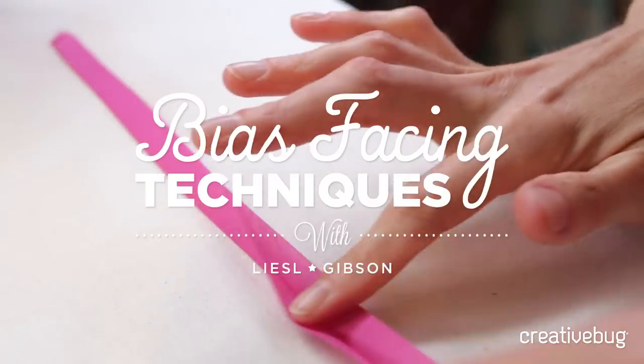One of my favorite ways to finish an edge, like a neckline or an armhole, is to use a bias facing. I'll show you what bias is, why it's useful, how to make it, and how to apply it to finish an edge.